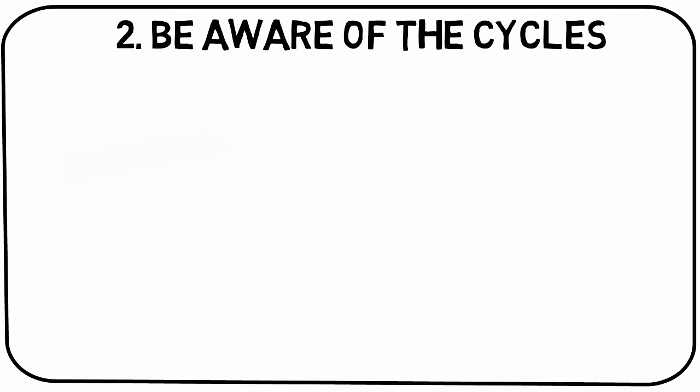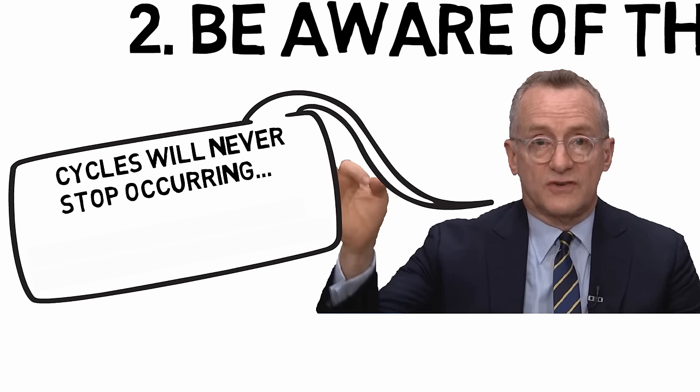Takeaway number two: be aware of the cycles. Cycles will never stop occurring. If there was such a thing as a completely efficient market, and people really made decisions in a calculating and unemotional manner, perhaps cycles would be banished, but that'll never be the case.